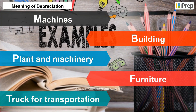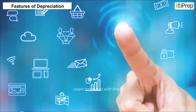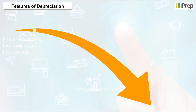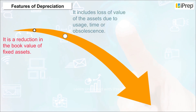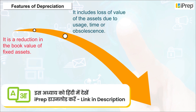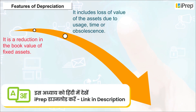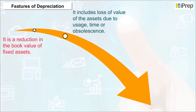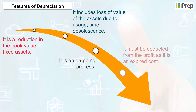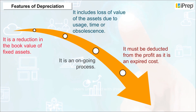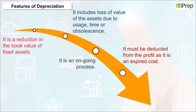Features of Depreciation: It is a reduction in the book value of fixed assets. It includes loss of value of assets due to usage, time, or obsolescence. It is an ongoing process. It must be deducted from the profit as it is an expired cost.